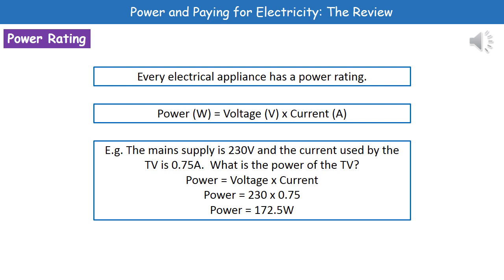Turn to page 2 and find the calculation: power is voltage times current. Then substitute in the numbers — voltage is 230, current is 0.75. Put that into your calculator and that gives you 172.5 watts as the power.